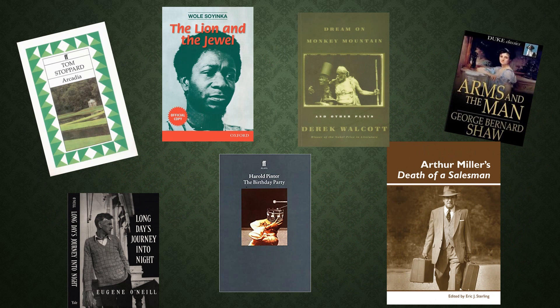Apart from British literature, we should also learn post-colonial literature and American literature. We have Arms and the Man by G.B. Shaw — G.B. Shaw is really important and you have to learn all his works. Derek Walcott is very, very important — do not forget him. Dream on a Monkey Mountain is very important. Arthur Miller's Death of a Salesman, Harold Pinter — read his whole biography and Birthday Party is very important; all works of Harold Pinter are important. Eugene O'Neill's Long Day's Journey Into Night.